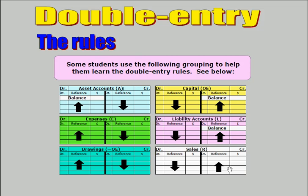Notice how these accounts are grouped on the screen. On the left hand side are assets, expenses, and drawings, because in each of those three types of ledger accounts, increases are shown by debits. On the right hand side of the screen are capital, liability accounts, and sales — to show an increase in any of those three accounts, we have credit entries.